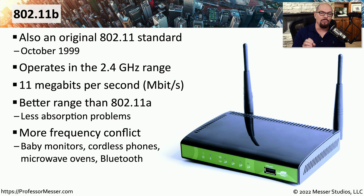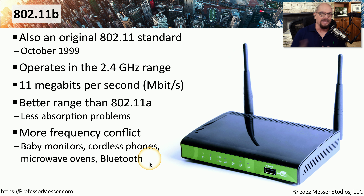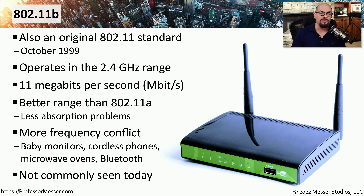One challenge with the 2.4 gigahertz range is that wireless networks are not the only devices that use those frequencies. It's very common to see baby monitors, cordless phones, or even the Bluetooth standard take advantage of 2.4 gigahertz frequencies. This means we could have frequency conflicts when trying to communicate using all of these devices simultaneously in one area. It's also difficult to find 802.11b networks still operating today, and if you do, it's probably because you're upgrading it to a newer version.